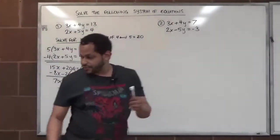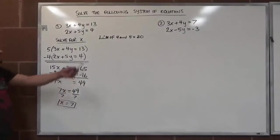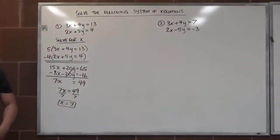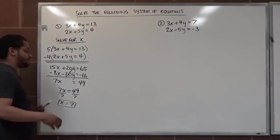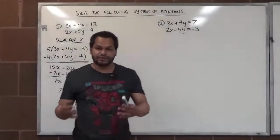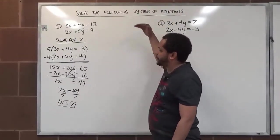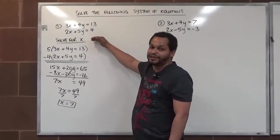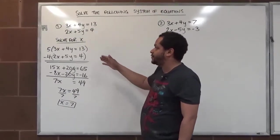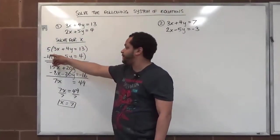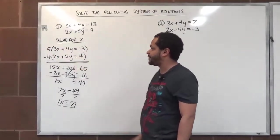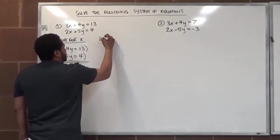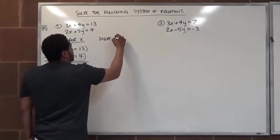To get our second solution point, instead of substituting x into one of the original equations, we're going to start all the way over with the original equations and solve for y by canceling the x's using the same LCM trick — but now with the coefficients 2 and 3. Doing this gives you twice the practice and helps you solve with versatility.